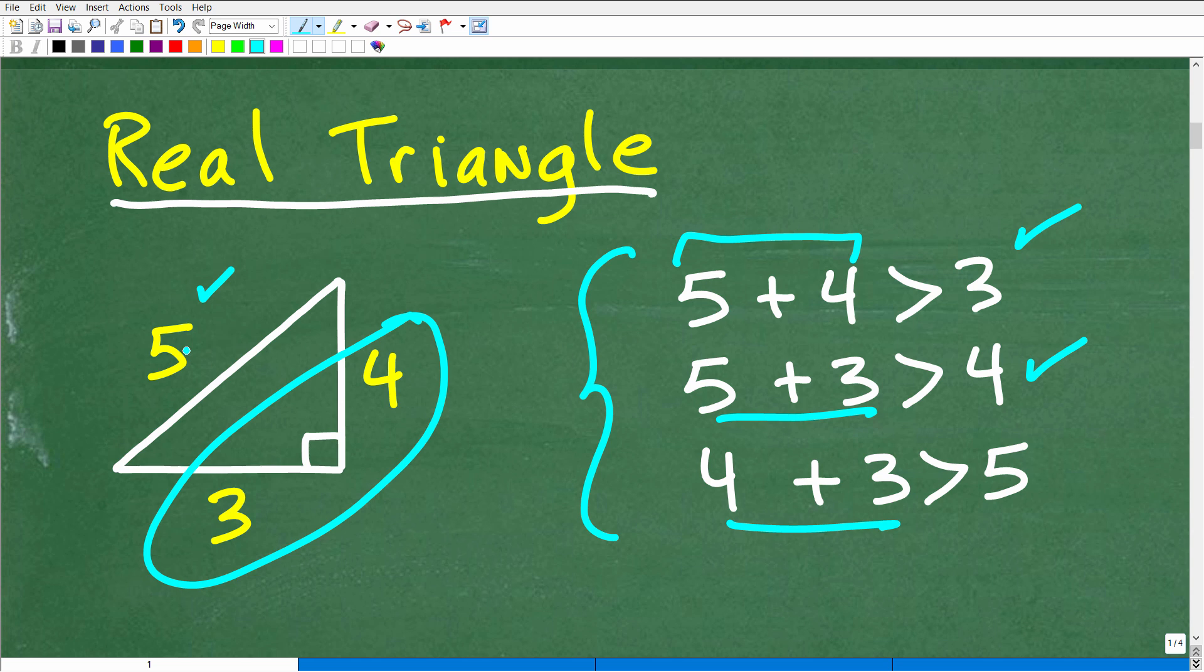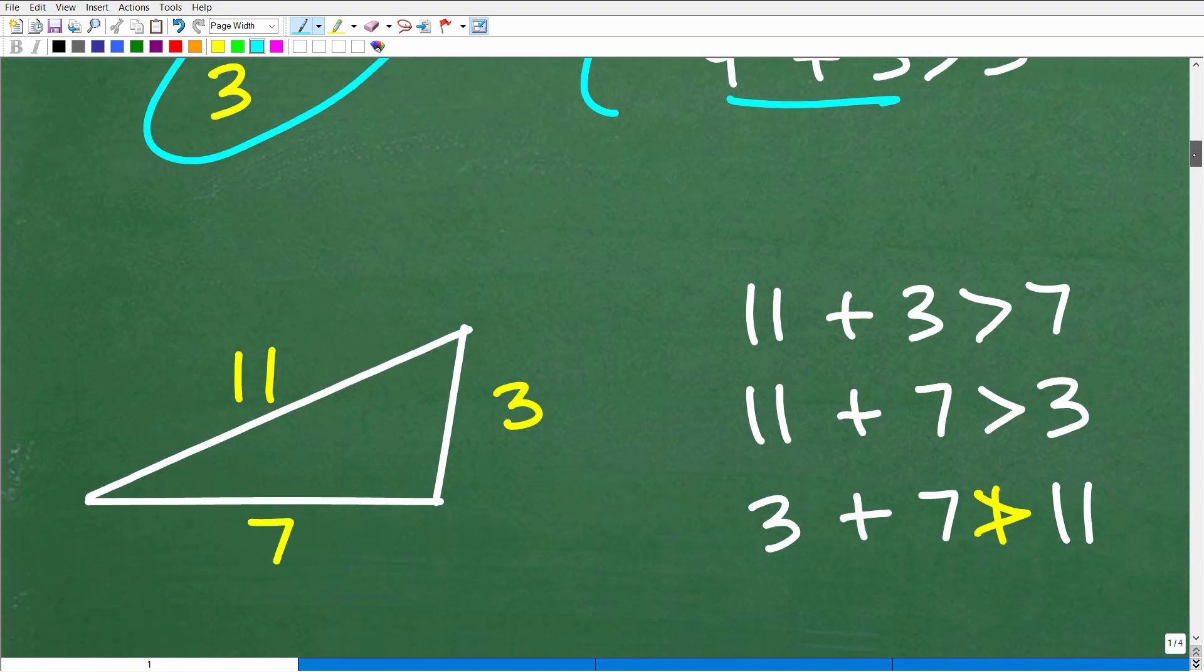So this is what we call the triangle inequality. And any triangle, okay, actual triangle will have this property. Okay, so the measure of the sum of any two sides will always be greater than that third side. And it's got to work with all three sides of the triangle. So now, knowing that, let's go to our problem, right?